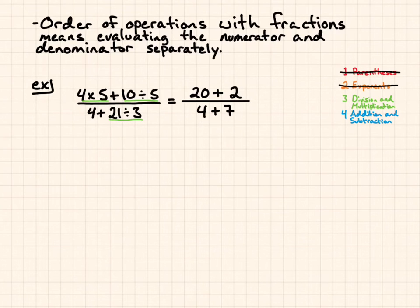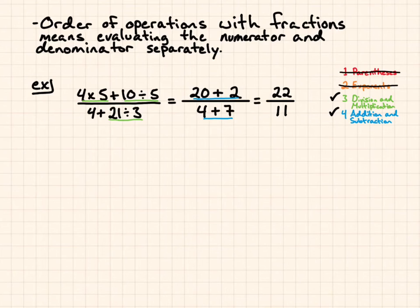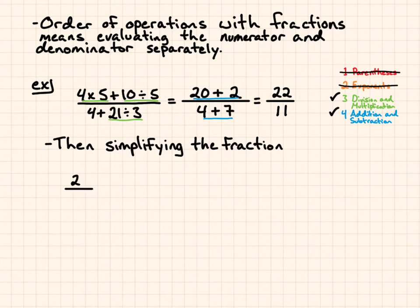Next, I'm done with division and multiplication, so I move to addition and subtraction. 20 plus 2 in the numerator is 22, and 4 plus 7 is 11. Now I can simplify this fraction: 22 divided by 11. I simplify by dividing both top and bottom by 11, and I end up with 2 over 1, or 2. You can also see that 11 goes into 22 two times.